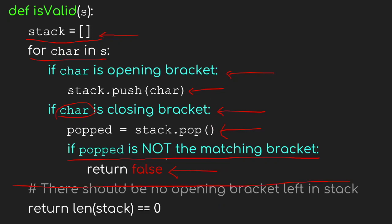If the function has not returned false, then we know every closed bracket has found a corresponding open bracket partner. But that doesn't mean the string is valid — at the end, the stack could still be non-empty, meaning there are open brackets that never found a closing bracket. So there's one last condition to check: after the loop finishes, we verify that the stack is empty, confirming there are no more open brackets left to close.